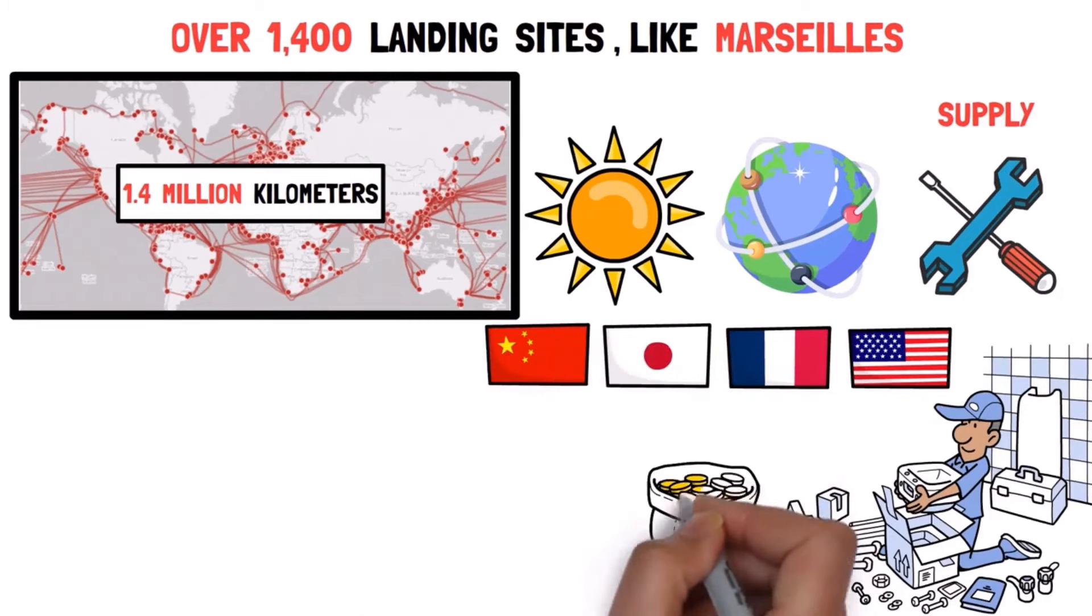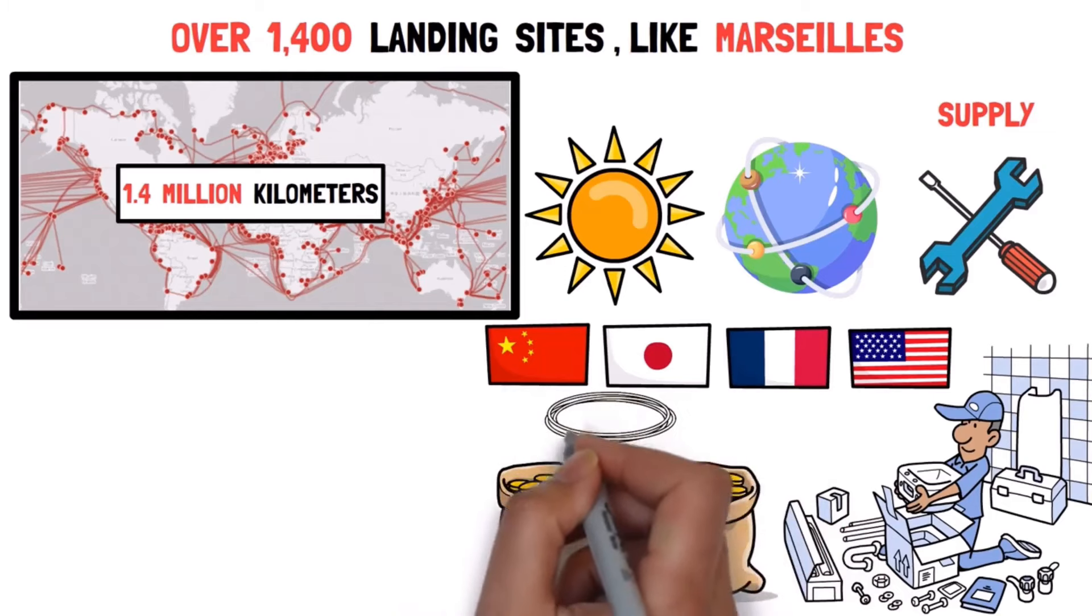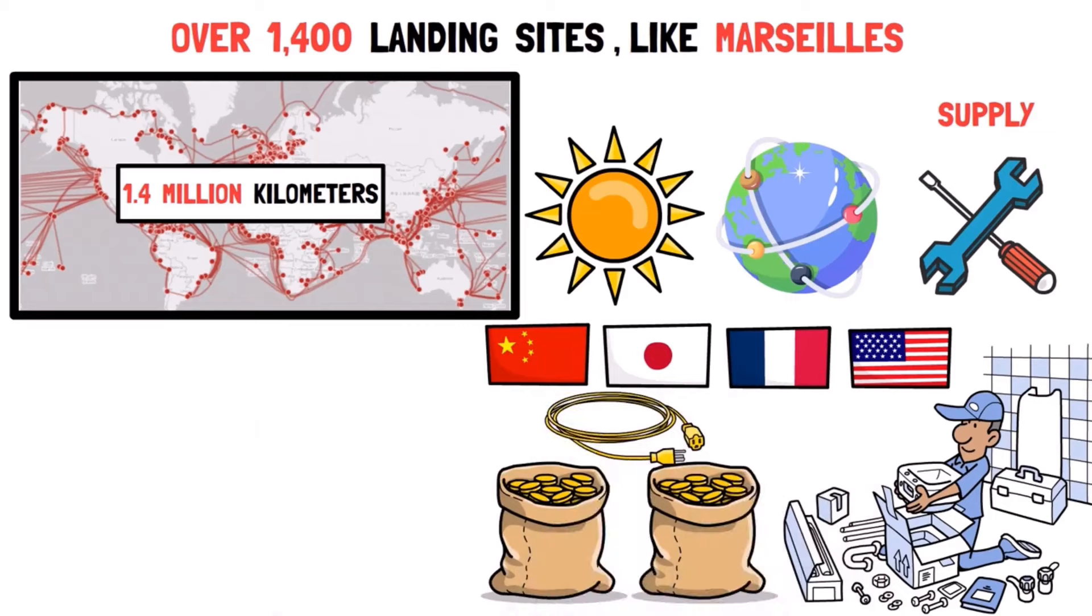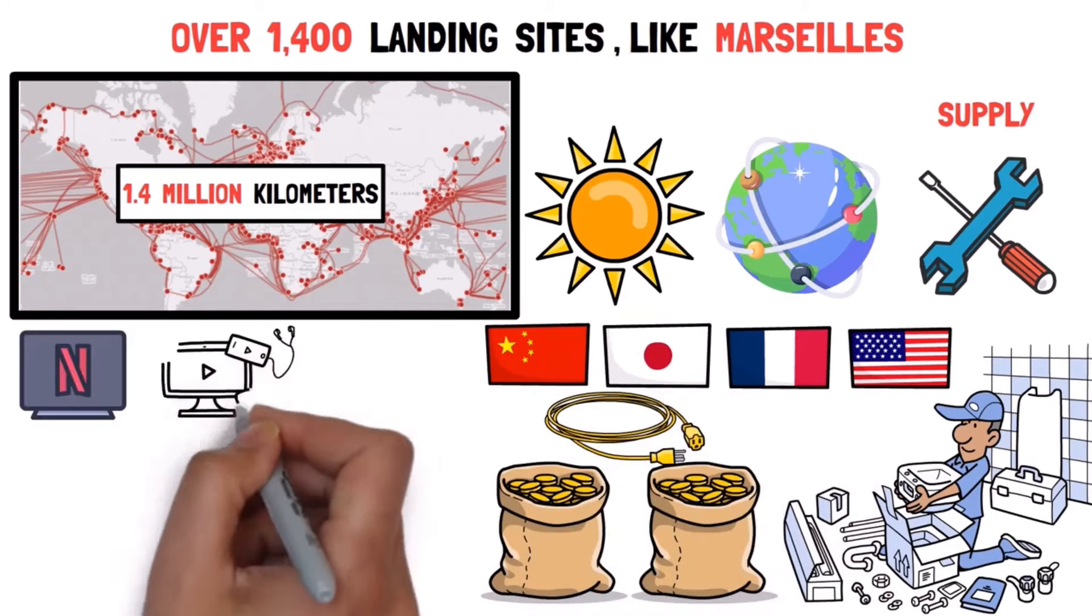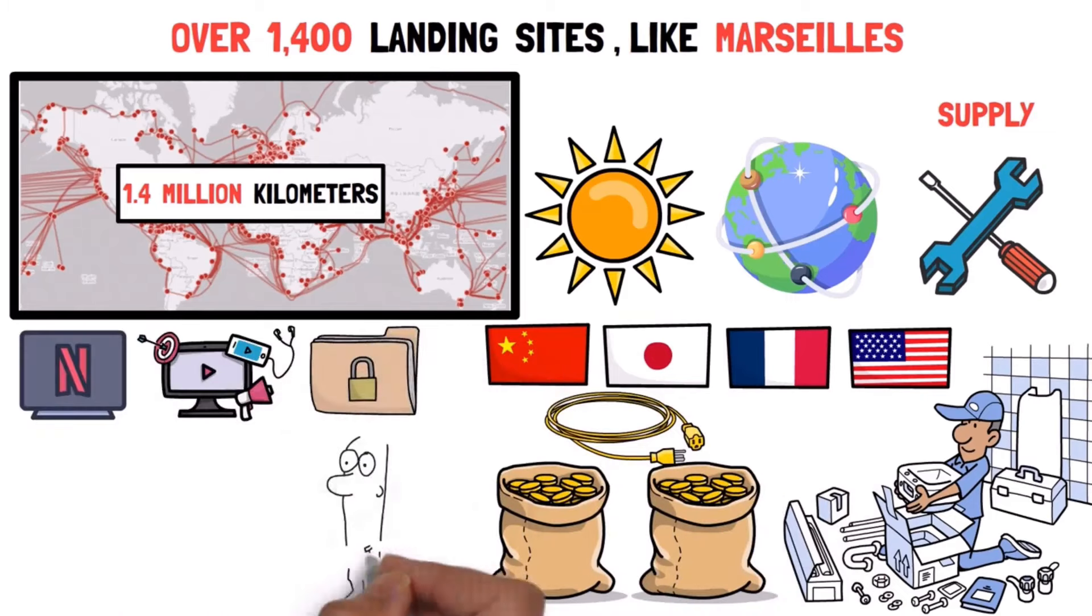More than $10 trillion worth of financial transactions are transmitted via these cables every single day. Everything from Netflix programs to YouTube videos, top-secret diplomatic cables, and military orders passes through this undersea network. Now, China and America are leveraging every instrument of state credit available to wrest control and set the power parity for the 21st century.